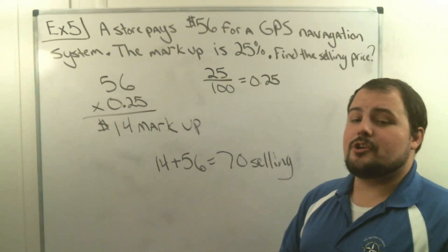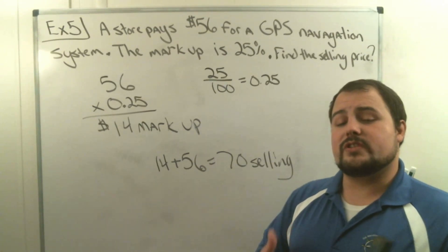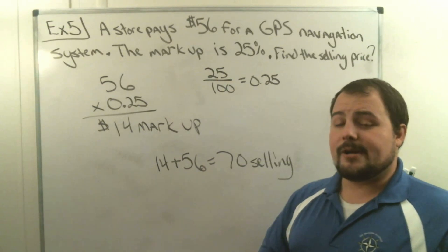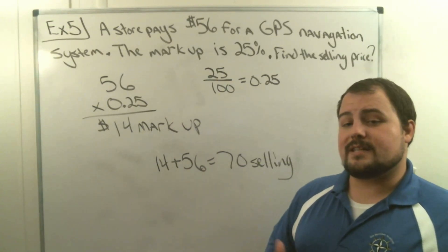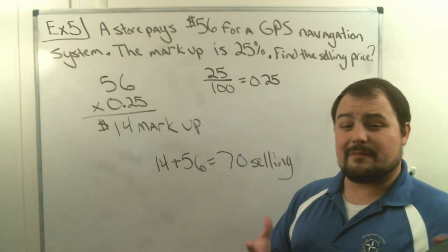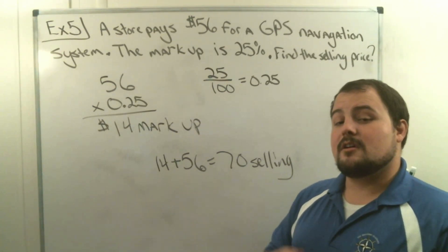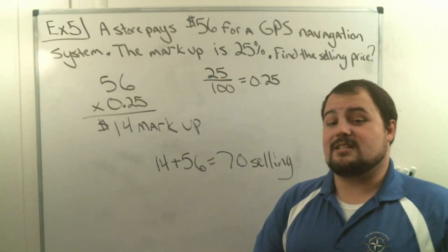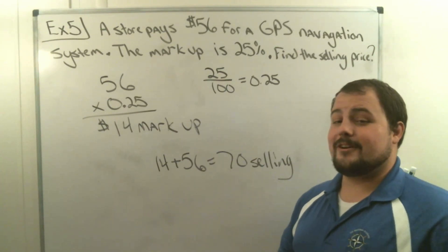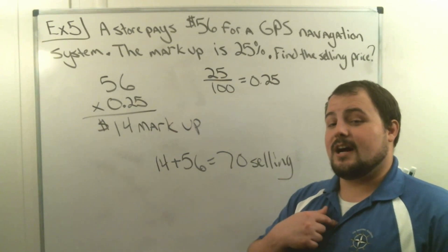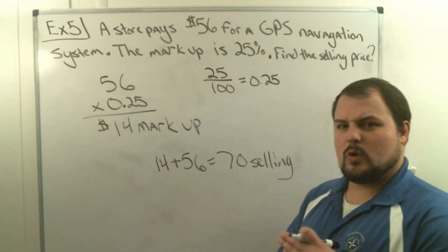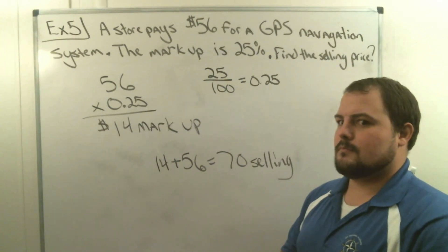Sometimes if you just want to know what the markup is, take your percent and multiply it by the whole. If you want to figure out the total, it's best to add to 100%, change that percentage to a decimal, and multiply by the number. That's it for today's lesson — hopefully you liked this video, and I will see you next time!